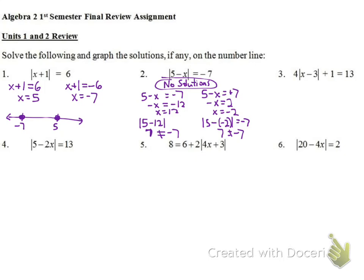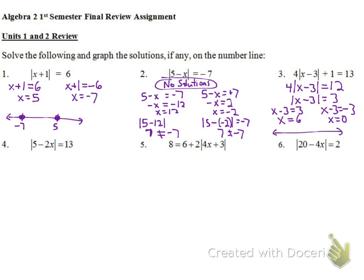Number 3: we isolate the absolute value by subtracting 1 from each side, giving 4|x - 3| = 12, then dividing by 4 gives |x - 3| = 3. So x - 3 = 3 gives x = 6, and x - 3 = -3 gives x = 0. Checking: |6 - 3| = 3, times 4 plus 1 = 13 ✓. |0 - 3| = 3, times 4 plus 1 = 13 ✓. Points at 0 and 6 on the number line.